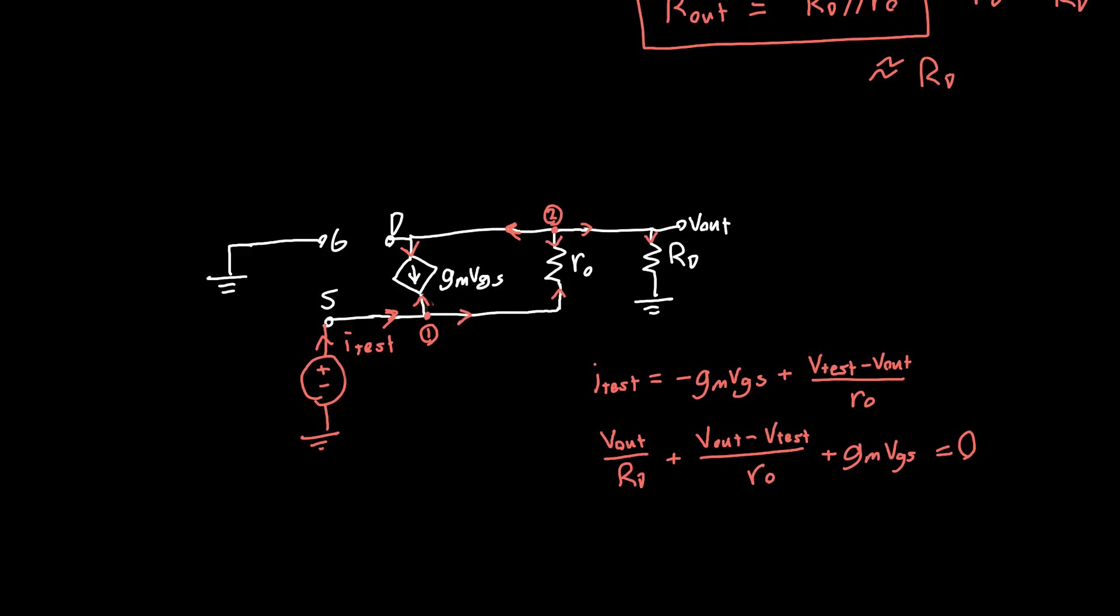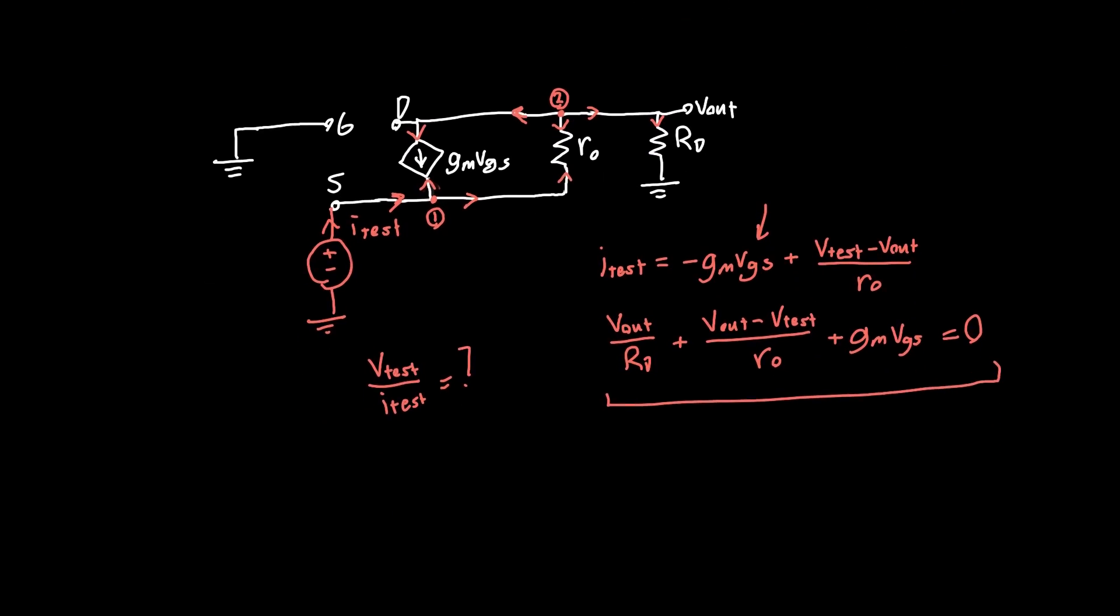We've got our two KCL equations. All we need to do now is reduce these into a form that we want. We want to reduce these into something that says V test over I test equals what? It's a number, or it's a set of these variables, but we want to know what it equals. First thing, we need to get rid of this VGS, because we can't have this VGS sitting in these equations.